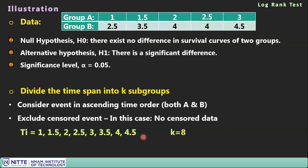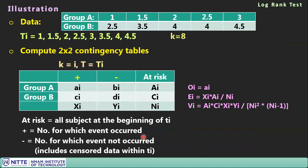For each of the 8 intervals, construct a 2×2 contingency table recording events and survivors for groups A and B. Then calculate Oᵢ, Eᵢ, and Vᵢ for each table using the formulas discussed.